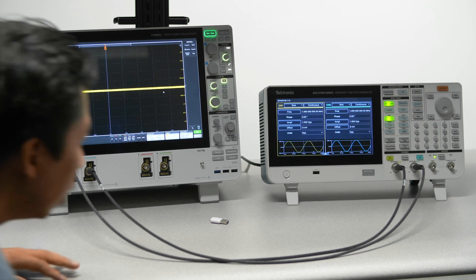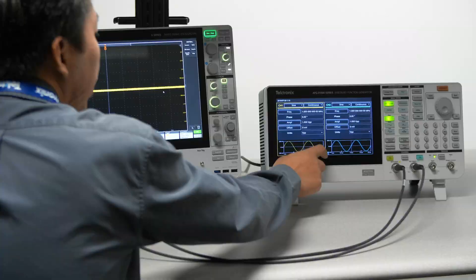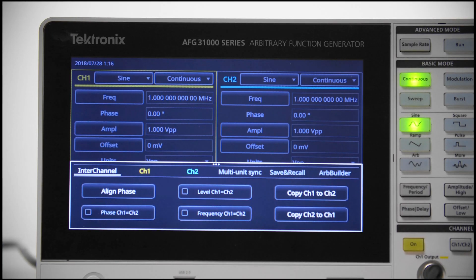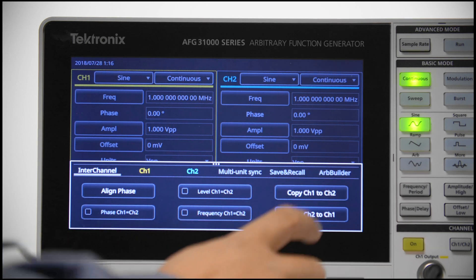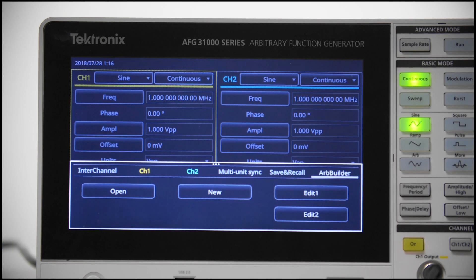Let's start by creating a new waveform. I'll swipe up from the bottom to access the setting bar and then select R Builder and New to create a new waveform.